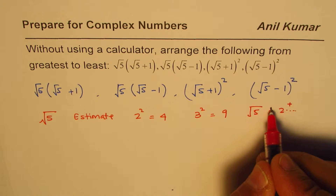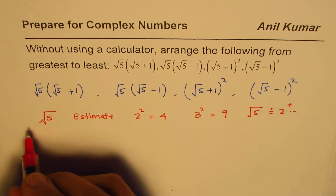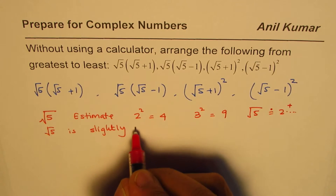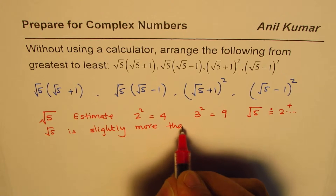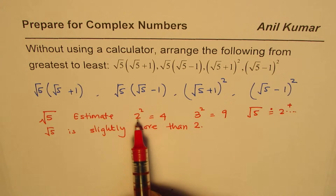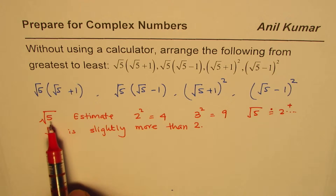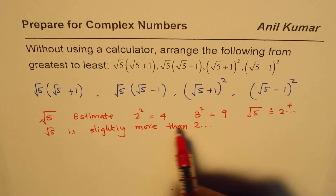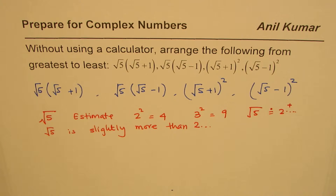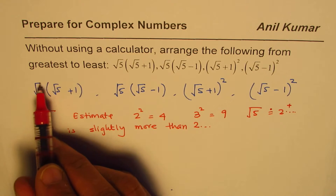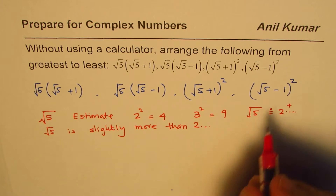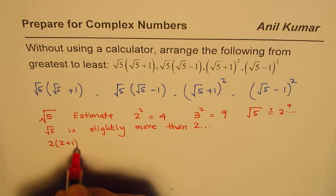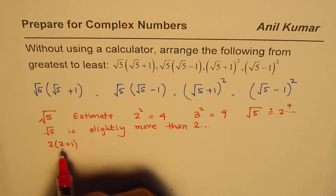We say √5 is approximately 2, but on the higher side — slightly more than 2. Since 2²=4 and 3²=9, and we need a number whose square is 5, it must be around 2-point-something. So one approach is to substitute 2 for √5 and calculate. For example, √5×(√5+1) becomes 2×(2+1)=6.